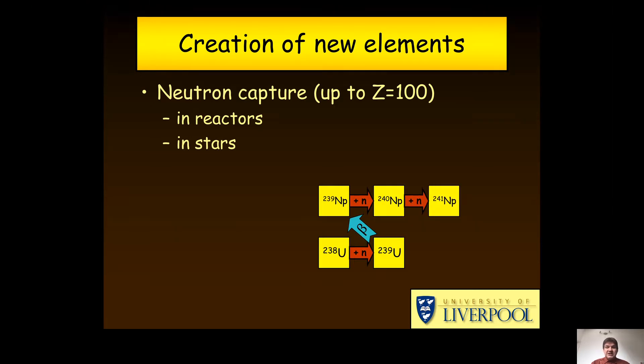Adding neutrons followed by beta decay. Sometimes two or more neutrons can be added together before the nucleus has time for beta decay, so we can climb higher and higher.